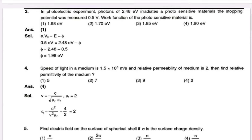The speed of light in a medium is 1.5 times 10^8 m/s. The relative permittivity of the medium is 2. Find the relative permeability of the medium. The formula is v equal to c by root of mu_r and epsilon_r, because epsilon_r is related to permittivity and mu_r is relative permeability. So epsilon_r is 2.